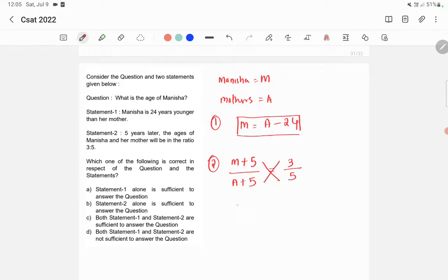So let's cross multiply. 5 times (M plus 5) equals 3 times (A plus 5). If you simplify it, you get 5M plus 25 equals 3A plus 15. So this is the equation from the second statement.